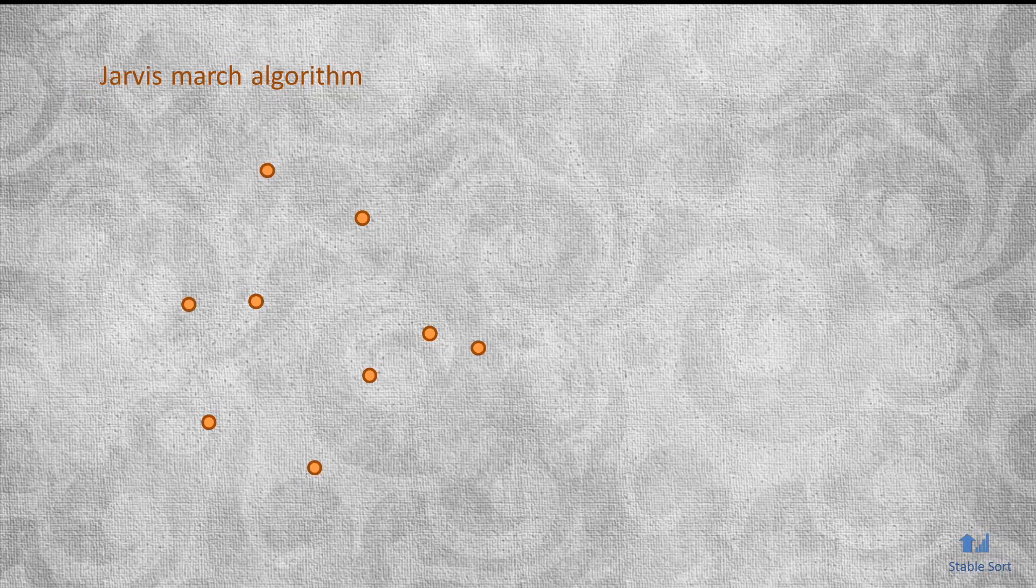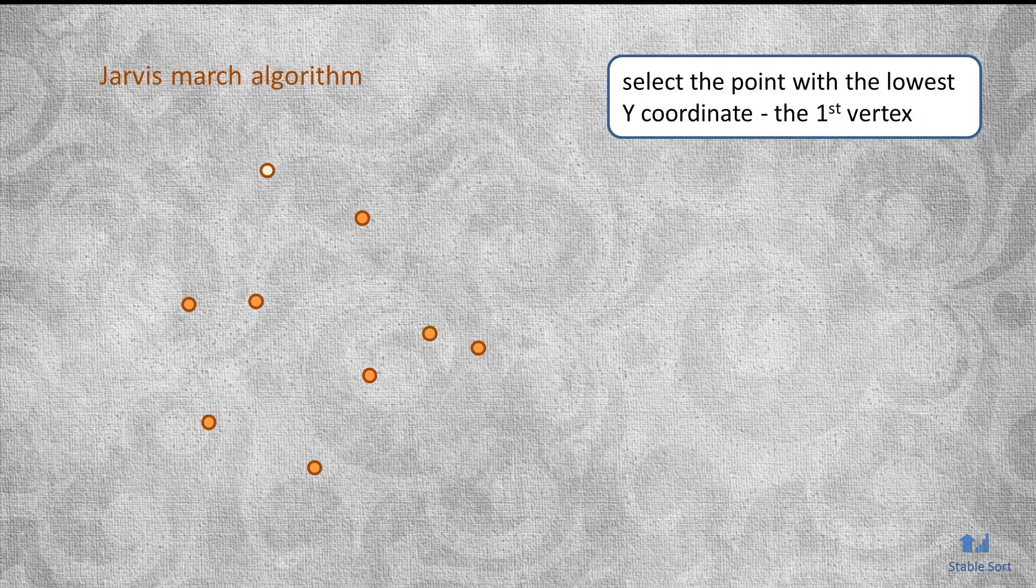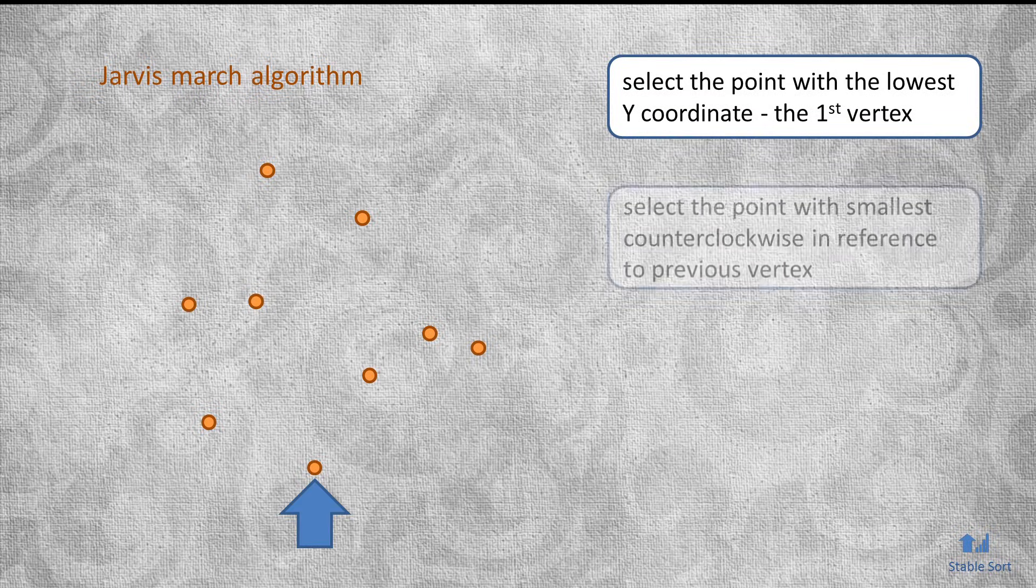Now that we've covered the Graham Scan algorithm, we can talk about its cousin, the Jarvis March, which is actually a little simpler. It also starts off by finding the lowest point on the y-axis for the first vertex.